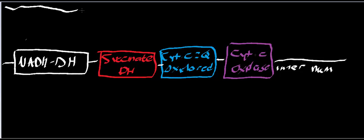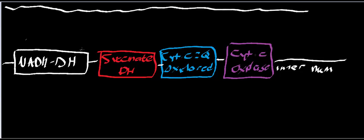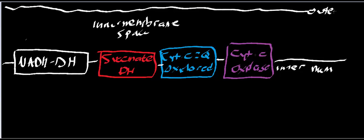Up here is the outer membrane of the mitochondria. In between is what we call the inner membrane space — basically the space between the outer and inner membranes. The mitochondria is a double membrane organelle. And then this is the mitochondrial matrix in here. This is where things like beta oxidation and pyruvate carboxylase occur — lots of processes happen in the mitochondrial matrix.